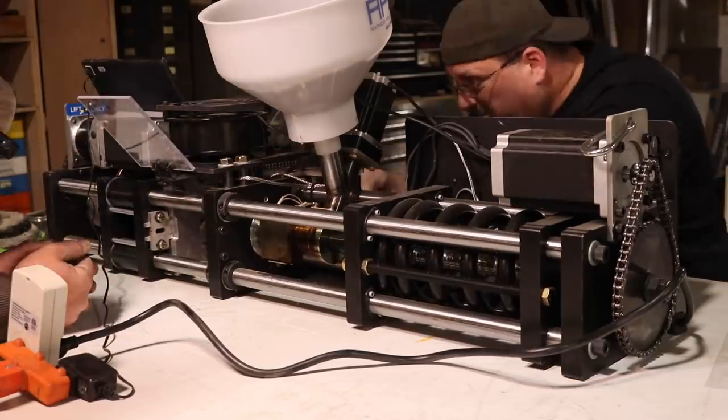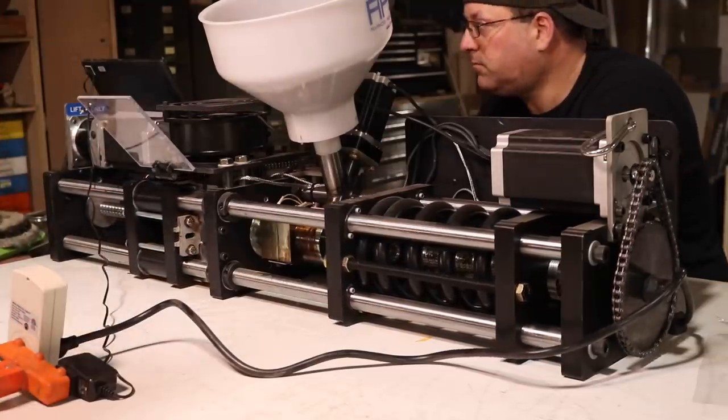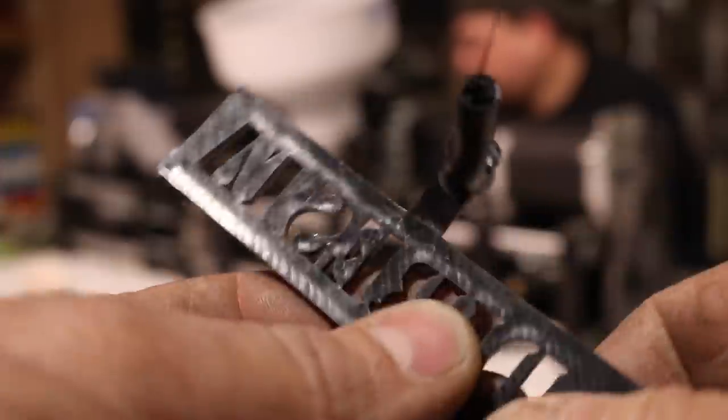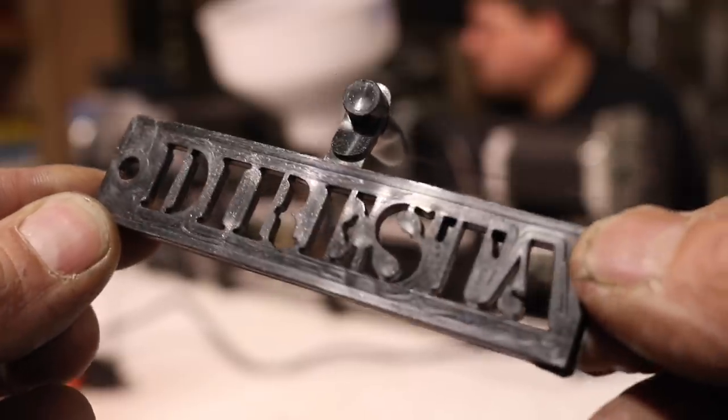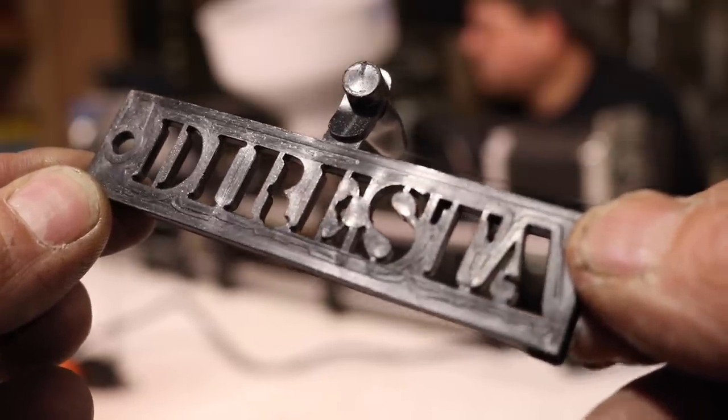Now this is the machine—just showing you the machine opening and closing in fast forward. You could see what happens every time you run a part: that big spring closes it, sets the pressure, and then the injector inserts the melted plastic. This is my finished part. I was real proud of this.